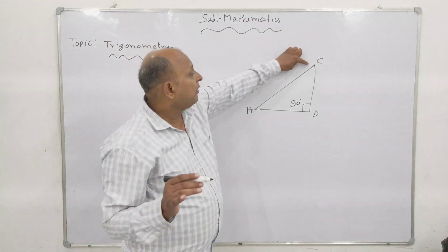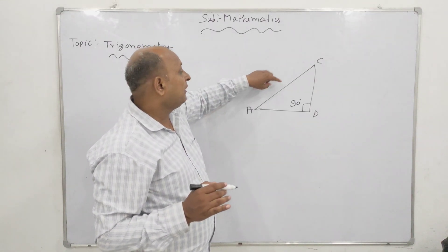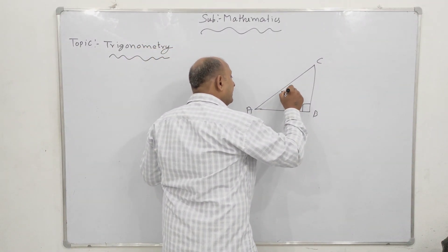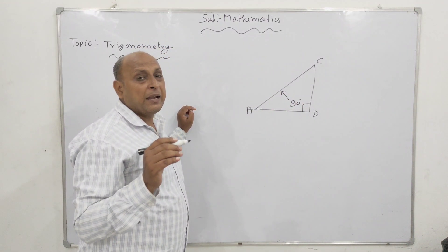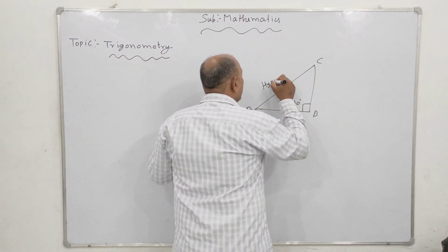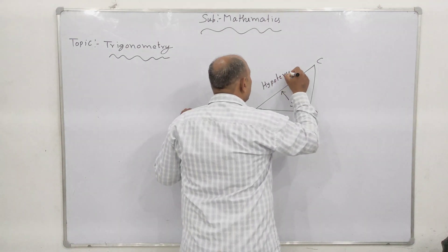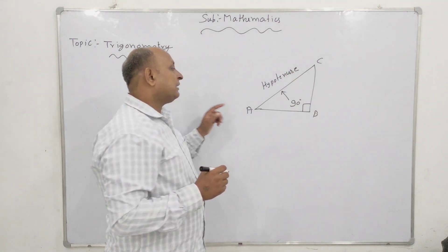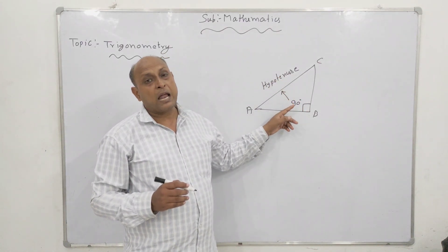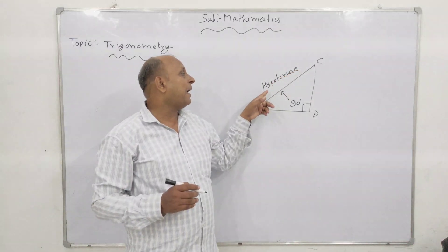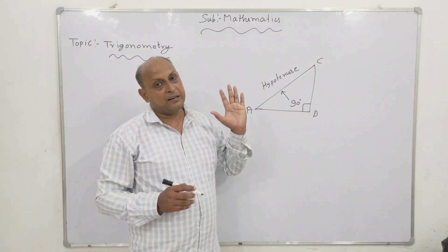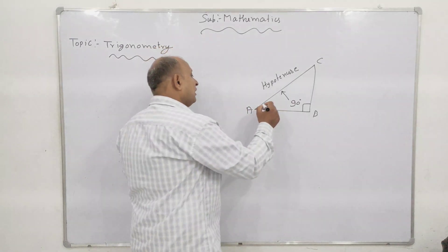First of all, I want to explain the side facing the angle. This side, which is in front of 90 degrees, is called the hypotenuse. The hypotenuse is the longest side, facing the right angle of the triangle.